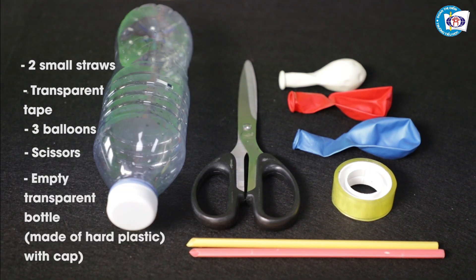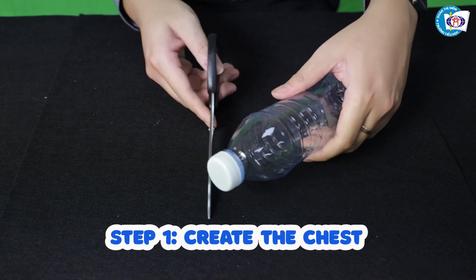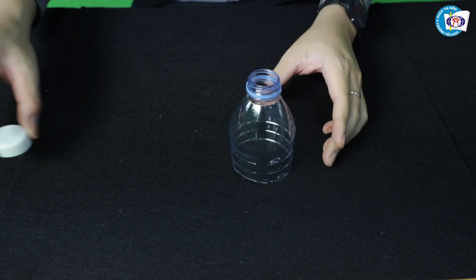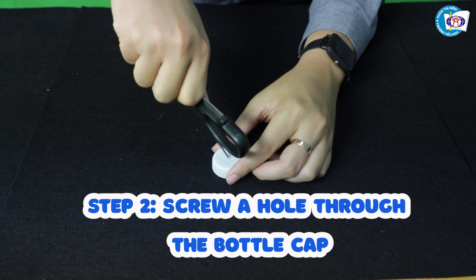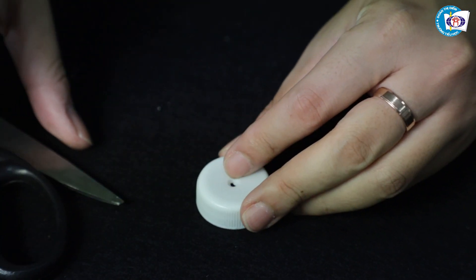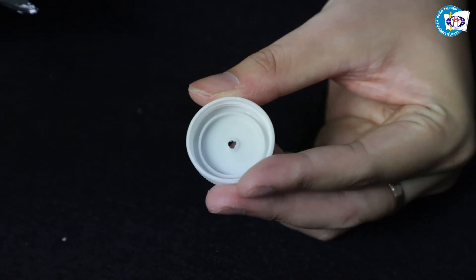and 1 empty transparent bottle made of hard plastic with cap. Step 1: Cut off the bottom half of the bottle. If the plastic is too hard, ask an adult for help. Step 2: Screw a small hole on the cap. Make sure the hole is just big enough for the straw to get through. We will need the cap to be airtight.